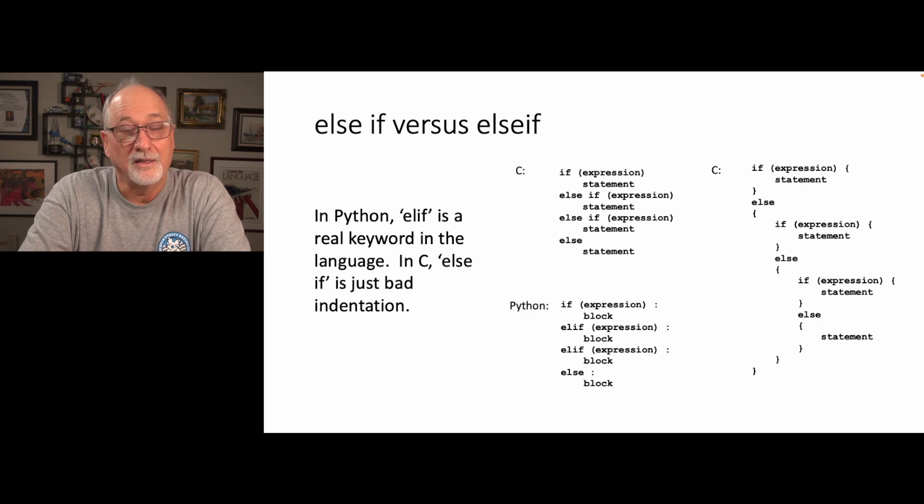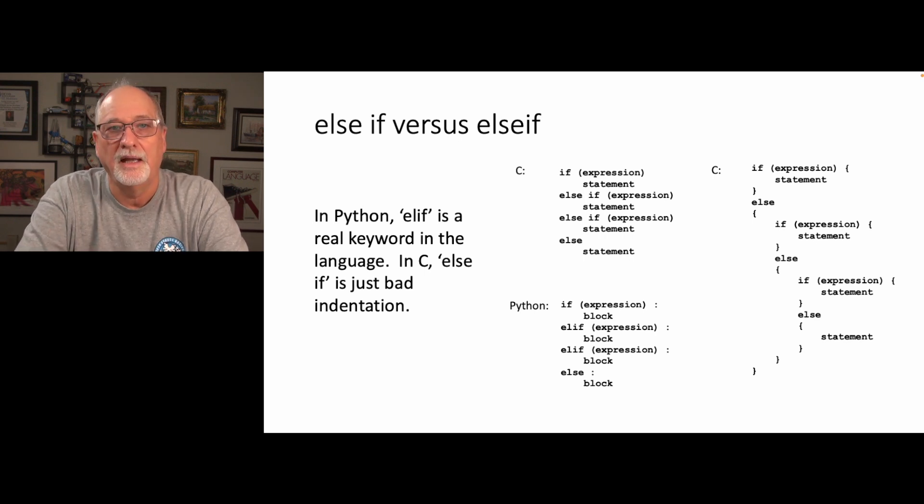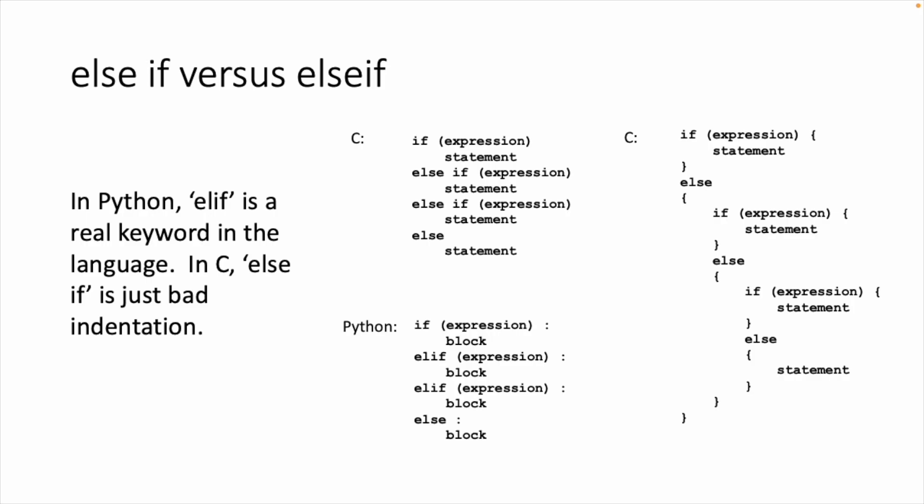Another thing that is very subtle is the notion of else if. So C predates Python. And C in this book shows else if as two separate words. There's an else keyword and an if keyword. And so you say else space if. And then you have the expression and another statement. Else space if expression and another statement. And then else for the one where none of those expressions are true. And if you look at Python, it looks almost identical. It says if expression, then elif expression, elif expression, and else.